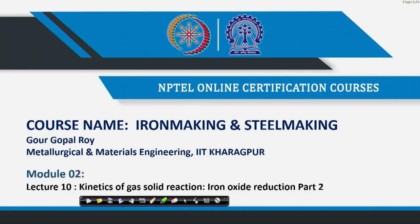Welcome, this is module 2 lecture number 10, Kinetics of Gas Solid Reduction, Iron Oxide Reduction, part 2. In the last lecture, we discussed that iron oxide reduction can be described by the shrinking core model. We discussed two rate controlling mechanisms: if the reaction is chemically controlled at the surface, what will be the time-conversion relationship? Similarly, if reduction is controlled by gas film control — that is, mass transfer through the gas film is the rate controlling step — what is the time-conversion relationship?